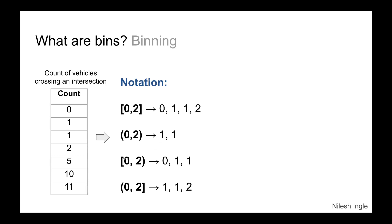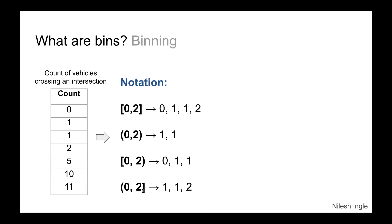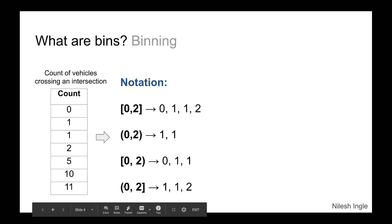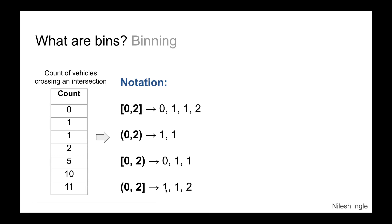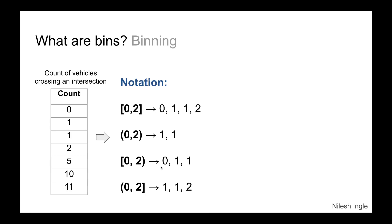For mixed notation: if you have a square bracket on the left and a parenthesis on the right, like [0, 2), then zero is included but two is not — giving values zero and one. Conversely, (0, 2] means zero is excluded but two is included. That is the general notation for binning.